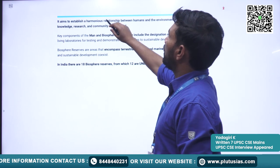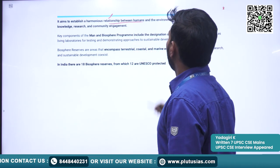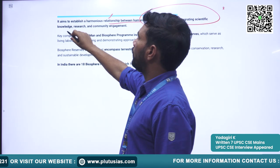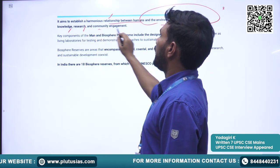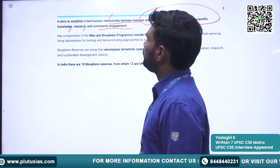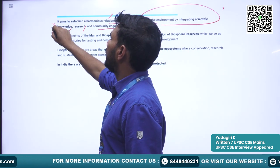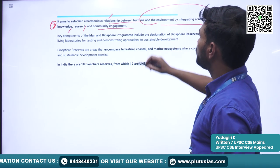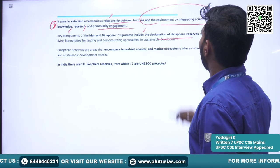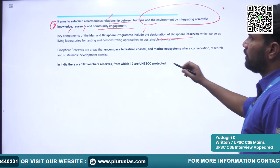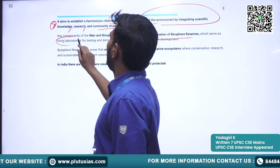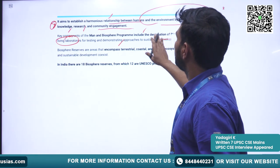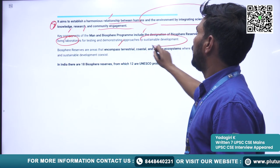It aims to establish a harmonious relationship between humans and the environment by integrating knowledge, research, and community engagement. This program includes the designation of Biosphere Reserves, which serve as living laboratories for testing and demonstrating approaches to sustainable development.